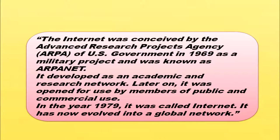How did the internet come into existence? Internet was conceived by the Advanced Research Projects Agency of the United States Government in 1969 as a military project and was known as ARPANET. It developed as an academic and research network. Later, it was opened to members of the public and commercial use. In 1979, it was called Internet, and it has now evolved into a global network.